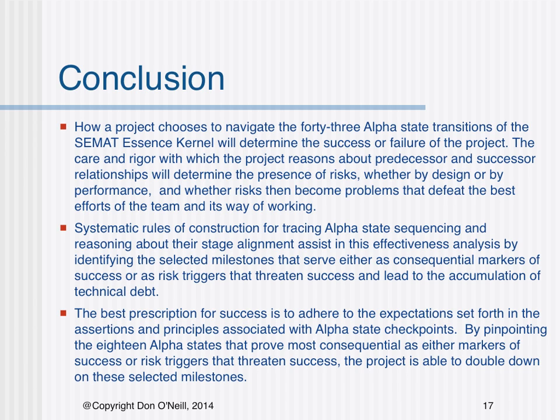Whether risks then become problems that defeat the best efforts of the team and its way of working, systematic rules of construction for tracing alpha state sequencing and reasoning about their stage alignment assist in this effectiveness analysis and in identifying the selected milestones that serve either as consequential markers of success or as risk triggers that threaten success and lead to the accumulation of technical debt. The best prescription for success is to adhere to the prescriptions set forth in the assertions and principles associated with alpha state checkpoints. By pinpointing the 18 alpha states that prove most consequential as either markers of success or risk triggers that threaten success, the project is able to double down on these selected milestones.